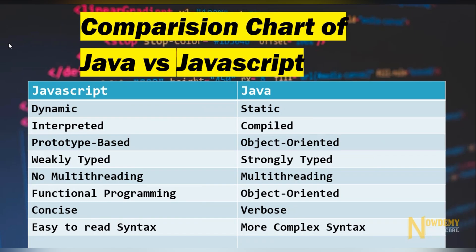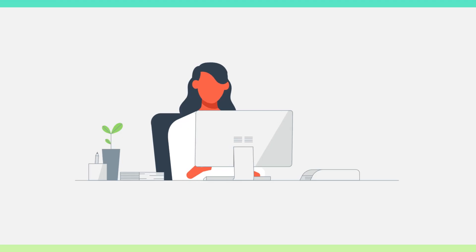JavaScript is dynamic while Java is static. JavaScript is prototype-based while Java is object-oriented. JavaScript is weakly typed while Java is strongly typed. JavaScript has no multi-threading while Java is multi-threaded. JavaScript supports functional programming while Java is object-oriented. JavaScript is concise while Java is verbose. JavaScript is easy to read while Java has more complex syntax.